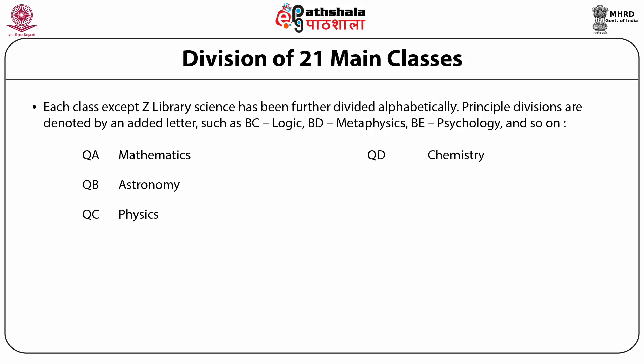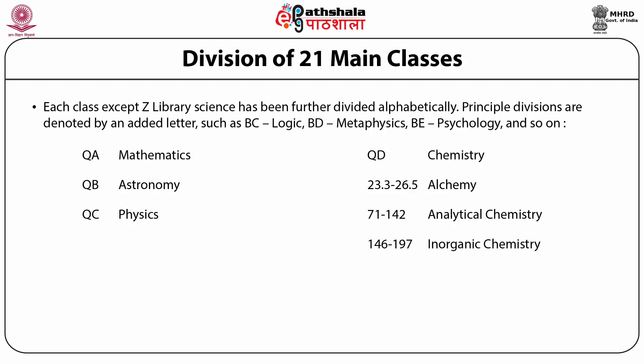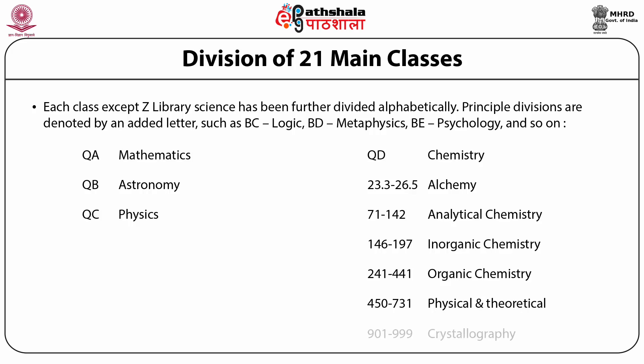QD Chemistry has been further divided by numerals as follows: QD 23.3 to 26.5 Alchemy; QD 71 to 142 Analytical Chemistry; QD 146 to 197 Inorganic Chemistry; QD 241 to 441 Organic Chemistry; QD 450 to 731 Physical and Theoretical Chemistry; QD 901 to 999 Crystallography. It may be noted here that the numerals here are not decimal figures but mathematical figures — it is 71 to 142, for example.